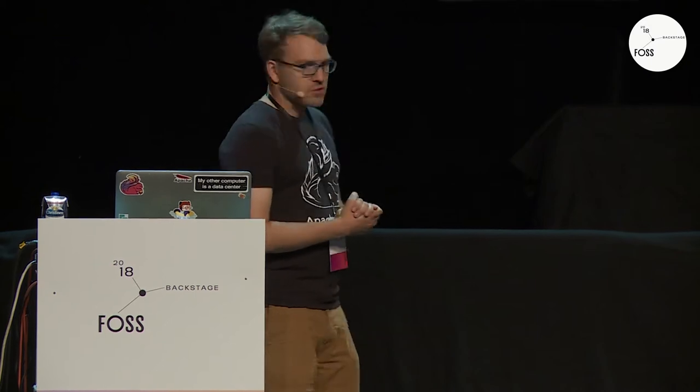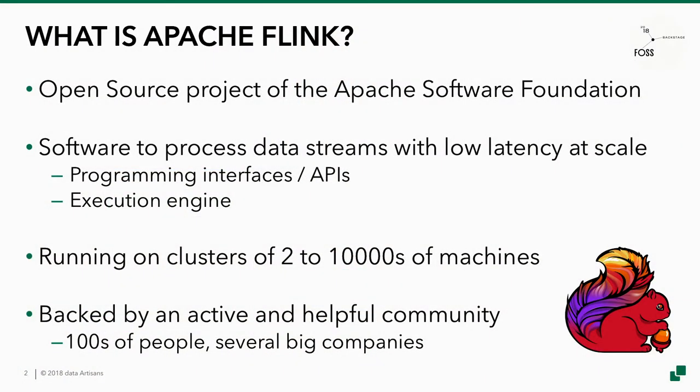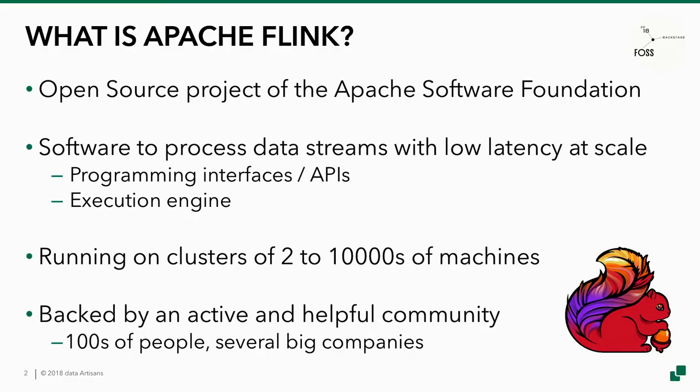First of all, a few words about what is Apache Flink, to get the context right. It is obviously an open source project of the Apache Software Foundation. The software is a stream processor that processes data with low latency at scale, so it's a distributed system. You deploy it in a cluster and then it processes streams of data. It consists of APIs to define the processing, the job that you want to run, and also the execution engine.